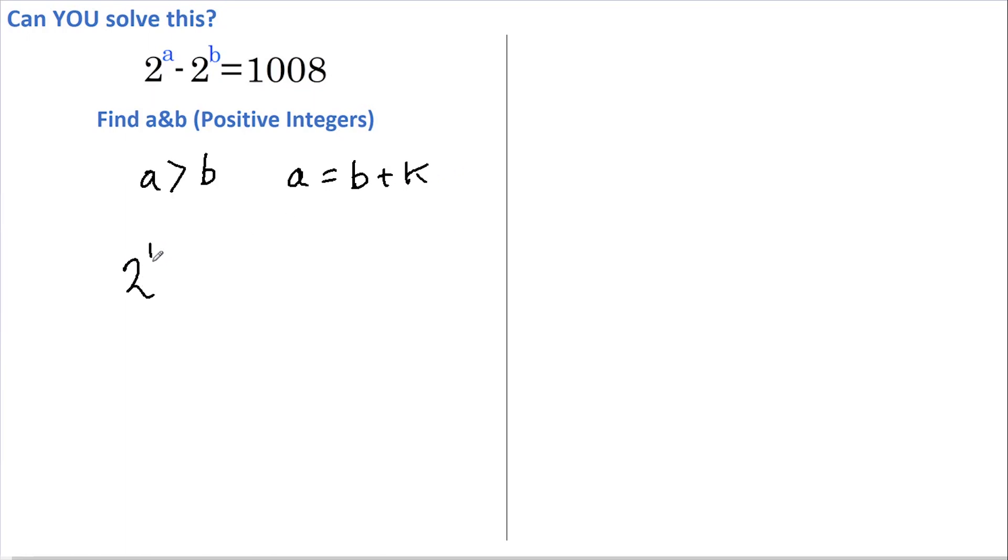We can therefore rewrite the above as 2 to the power of b plus k less 2 to the power of b equals 1008. And if we now utilize the rule that says a number raised to a power multiplied by the same number raised to a different power equals that same number to those powers added together, then we can rewrite this as 2 to the power of b multiplied by 2 to the power of k less 2 to the power of b equals 1008.